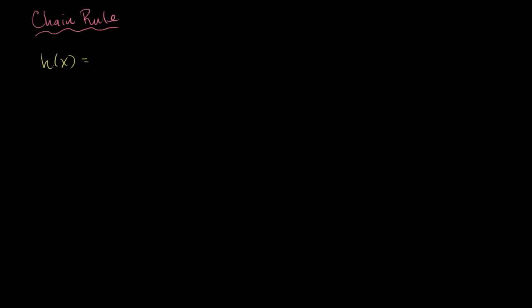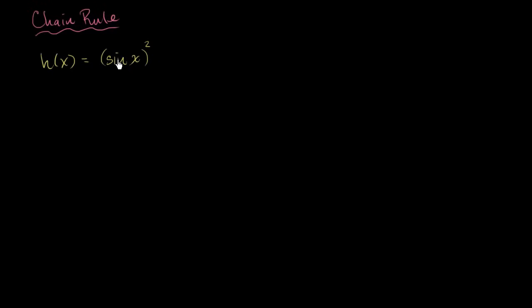So let's say that I have a function h of x, and it is equal to — just for example — sine of x squared. I could have written it like this: sine squared of x, but it'll be a little bit clearer using that notation. So let me make it so I have h of x.